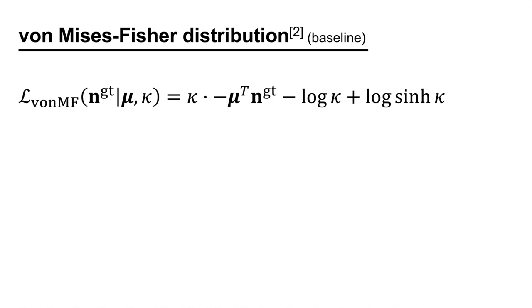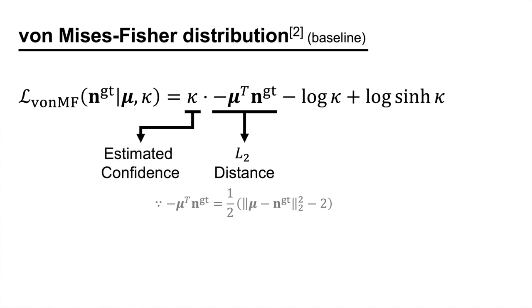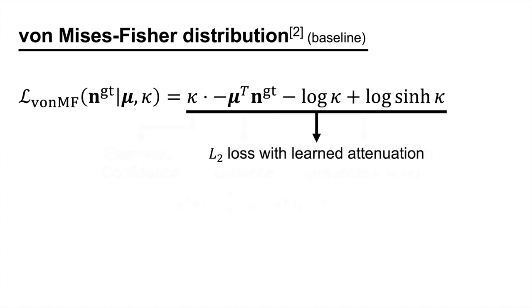Here is the corresponding training loss. The loss minimizes the L2 distance between the predicted mean and the ground truth. Then, the loss is weighted by the estimated confidence kappa. Lastly, the remaining terms prevent the network from estimating infinite kappa for every pixel. So, it is an L2 loss with learned attenuation.